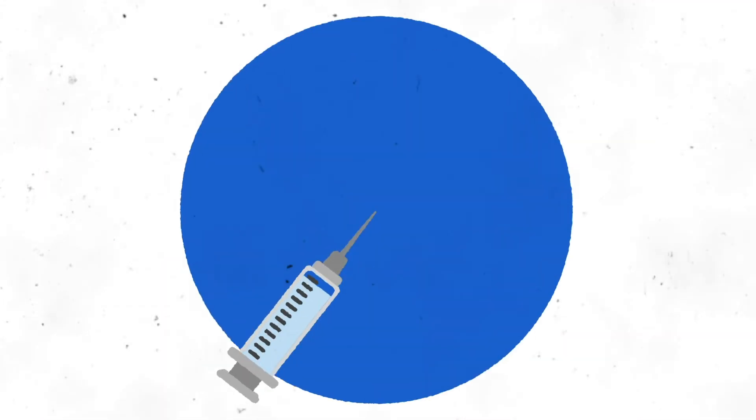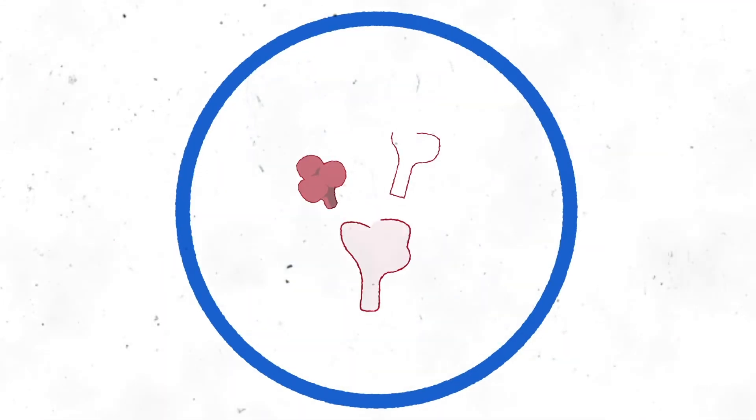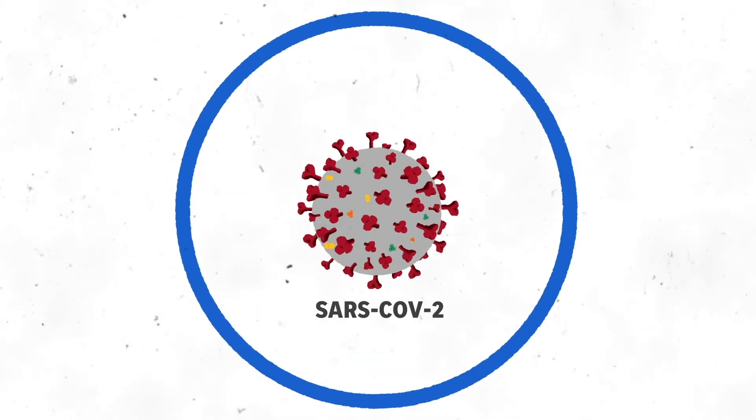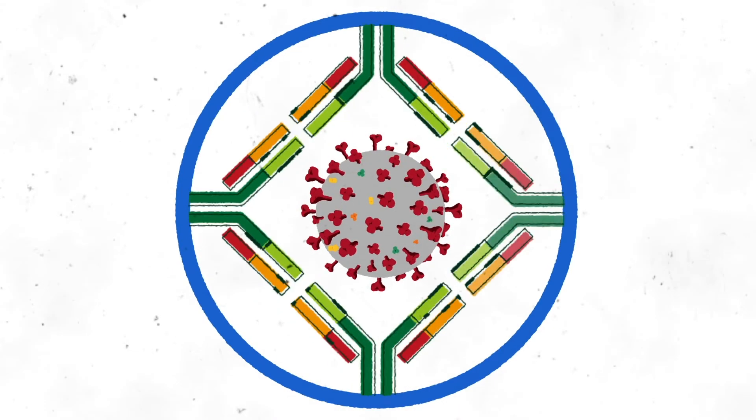Once vaccinated, your body starts making those spike proteins so your immune system will develop antibodies to fight the real thing, SARS-CoV-2, the virus that causes COVID-19.